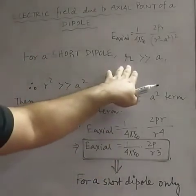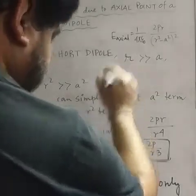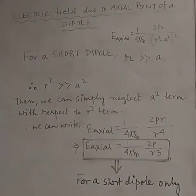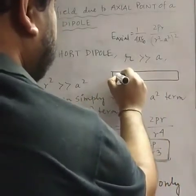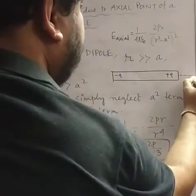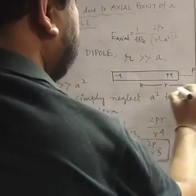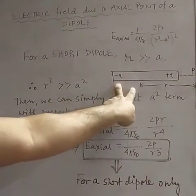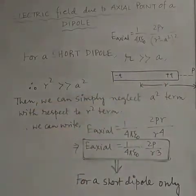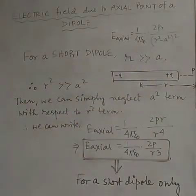For a short dipole, r is very very greater than 2a. We had one dipole with a negative charge and a positive charge, and at a far point P the distance is r. So when a is say 0.1 and r is 10, 20, 50, or 100 meters, that is a short dipole where r >> 2a.